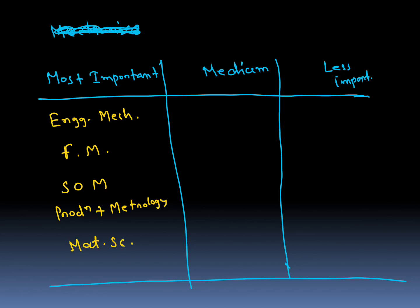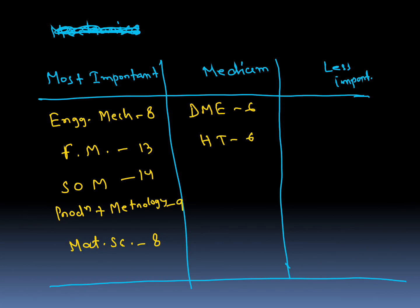Medium importance subjects: Design of Machine Elements (6 questions), Heat Transfer (6 questions), Math plus Aptitude (5 questions), Thermodynamics (3 to 6 questions), and Theory of Machine plus Vibration (around 5–6 questions combined).